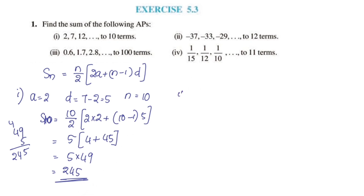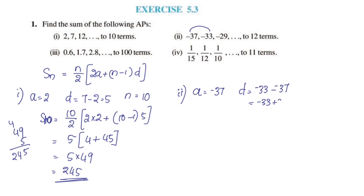Second question. A is negative 37. D is: negative 33 minus negative 37, which equals negative 33 plus 37, which equals 4. So D is 4.